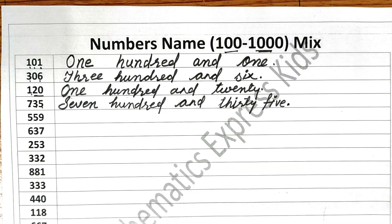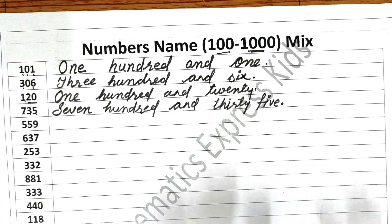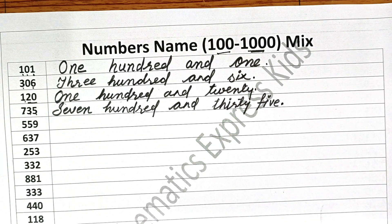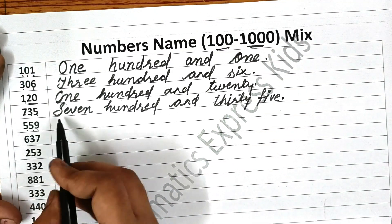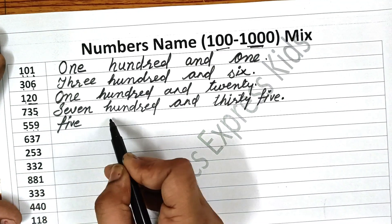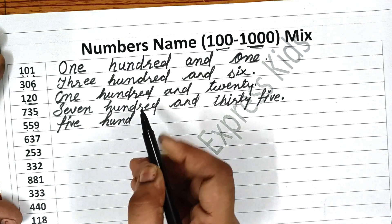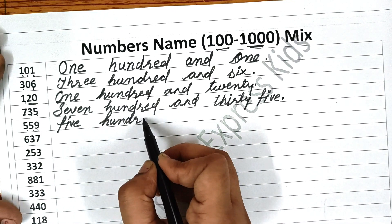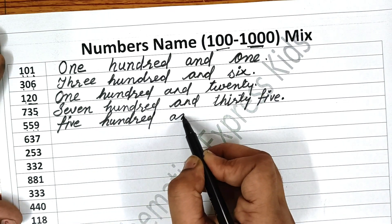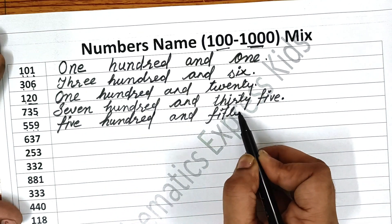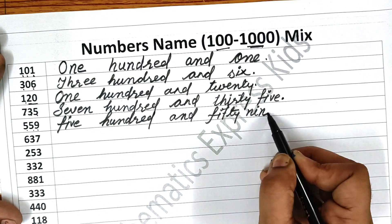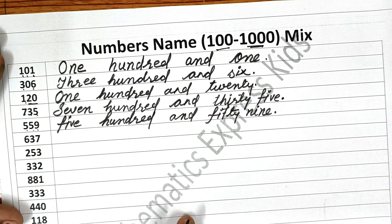If you have any doubt regarding number names, go and watch the video from 100 to 200 — it is already uploaded. Now, the next one is 559. First, 500 — H-U-N-D-R-E-D — and 59. Write fifty — F-I-F-T-Y — nine — N-I-N-E. 559.